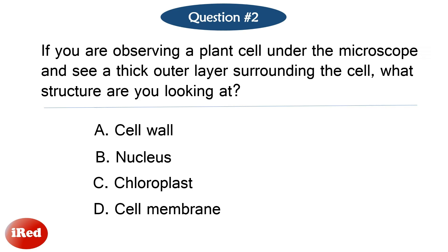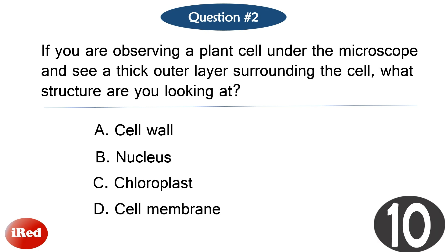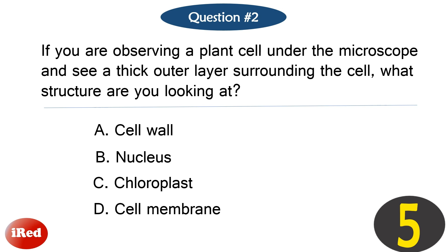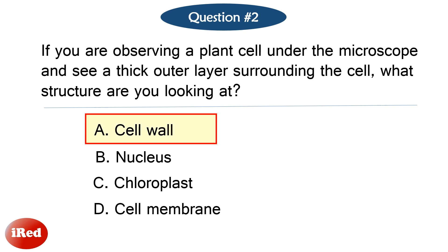Question number two. If you are observing a plant cell under the microscope and see a thick outer layer surrounding the cell, what structure are you looking at? The correct answer is letter A, cell wall.